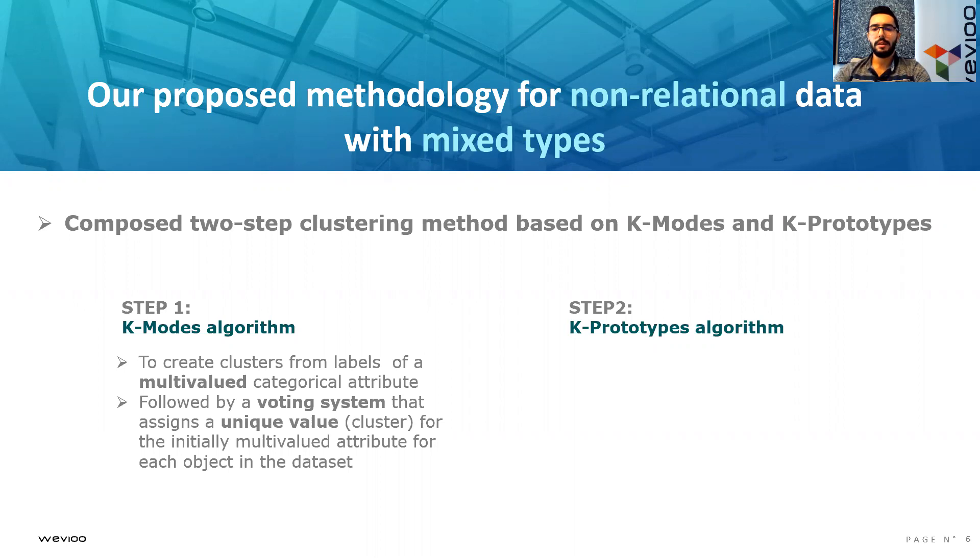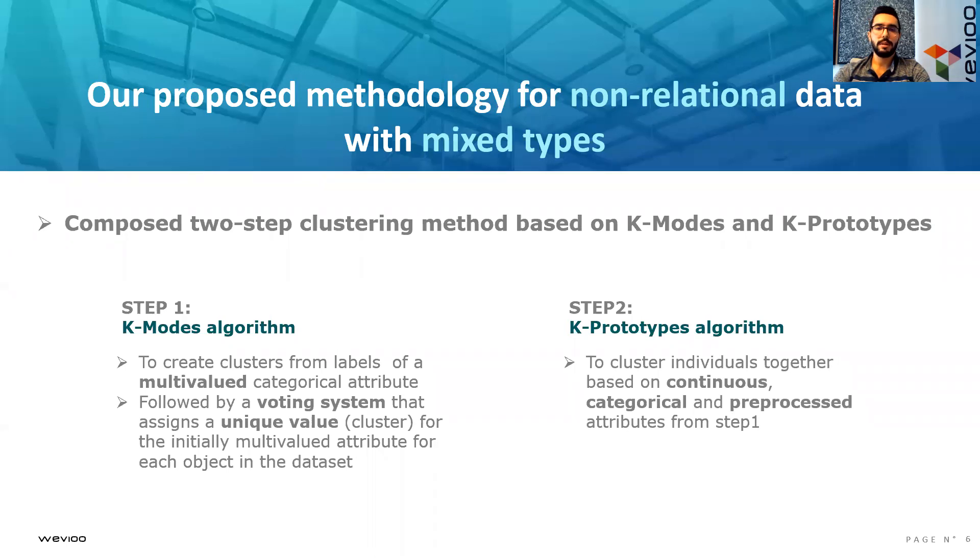In the second step, we use the K-prototypes algorithm to cluster individuals or objects in our dataset using the continuous, the categorical, and the preprocessed attributes from step one.